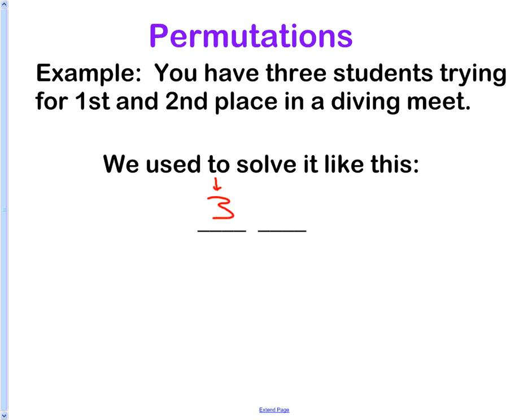Three. And then after I do that, I multiply it by how many choices I have for this spot, which is two. So three times two is six. There must be six ways.